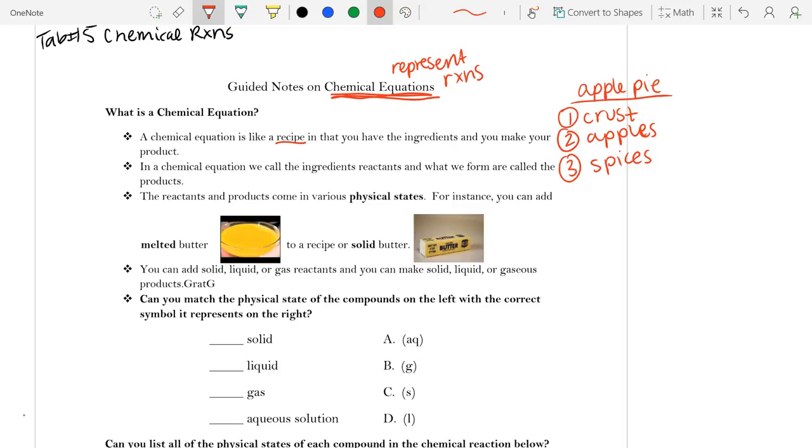Now, this is one way that I wrote it, as a list, but you could also say that a crust plus apples plus spices produces a pie.